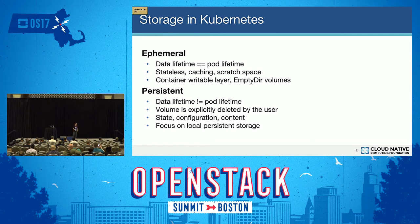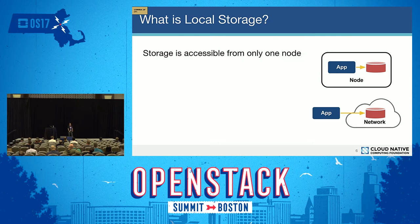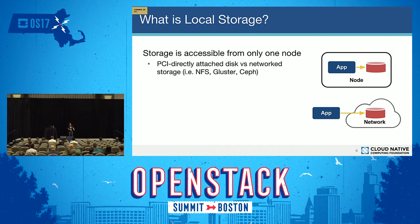The rest of this talk is going to focus mostly on local persistent storage use cases and mechanisms. What is local storage from the Kubernetes point of view? Storage is accessible from only one node. As an example, you can think of a PCI-attached disk and compare that to network storage like NFS or Ceph, where you can access those volumes from any node in the cluster.